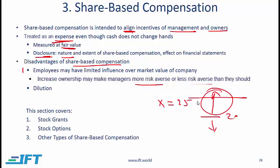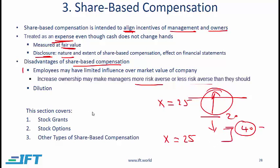On the other hand, if the stock price is much higher than the exercise price — for example, an exercise price of 25 and the stock is now up at 40 — management which has stock options might play it extra safe so as to lock in this gain. So with stock options, either of these issues might exist: managers might be more risk-averse than necessary, or they might be less risk-averse than they should be.